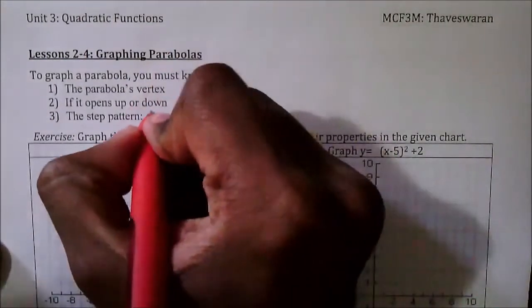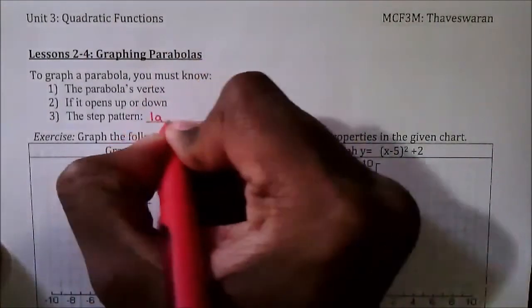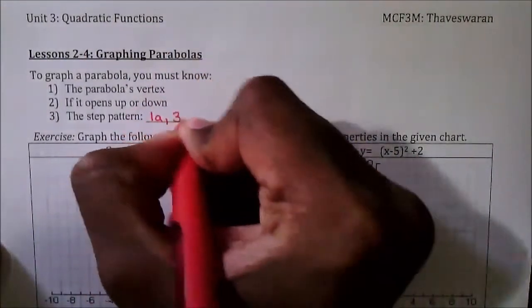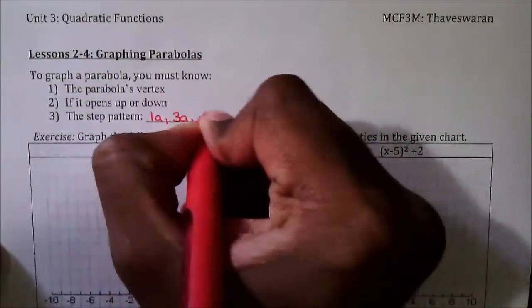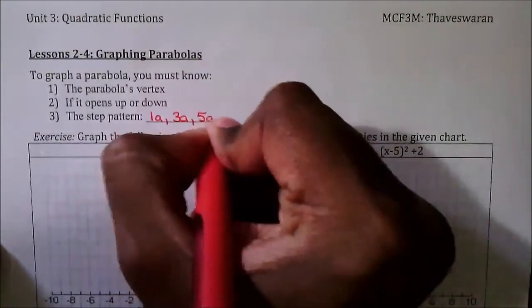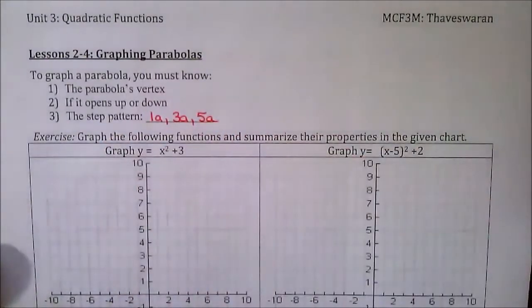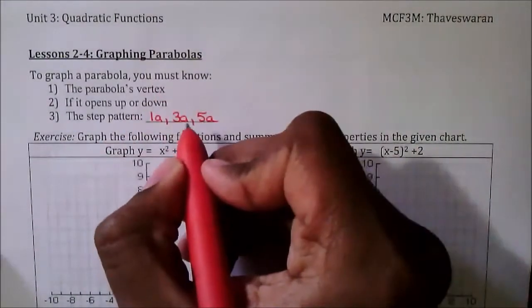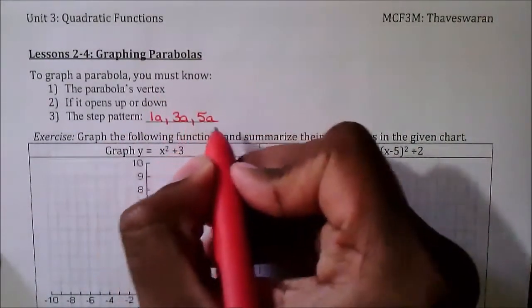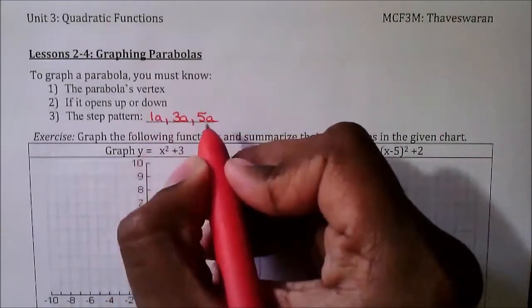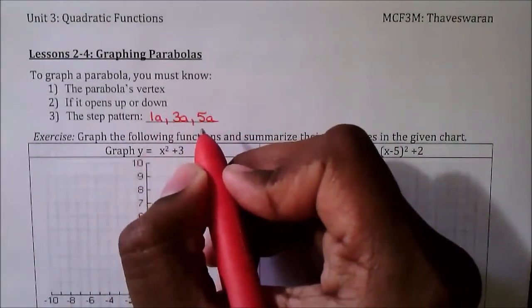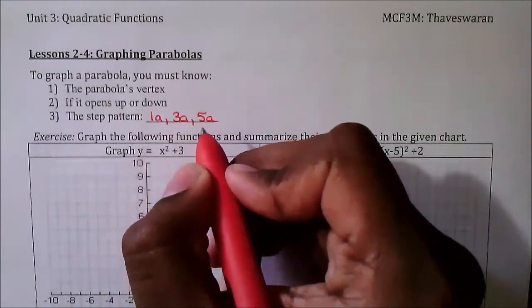The step pattern is 1a, 3a, and 5a, where you take the a value from the function and multiply it by these values.